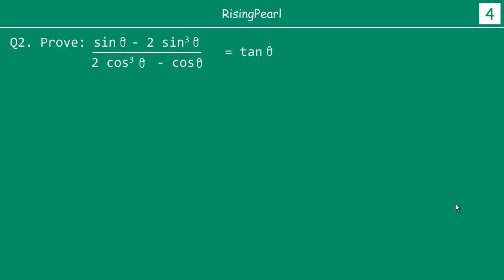Let's take a look at the second type of question. This looks a little bit more complex. We have to prove that sin θ minus 2 sin cube θ divided by 2 cos cube θ minus cos θ equals tan θ. Please recall that theta is a Greek character that represents an angle — it is commonly used in math for angles the way we use x for an unknown variable. So how do we actually go about solving something like this?